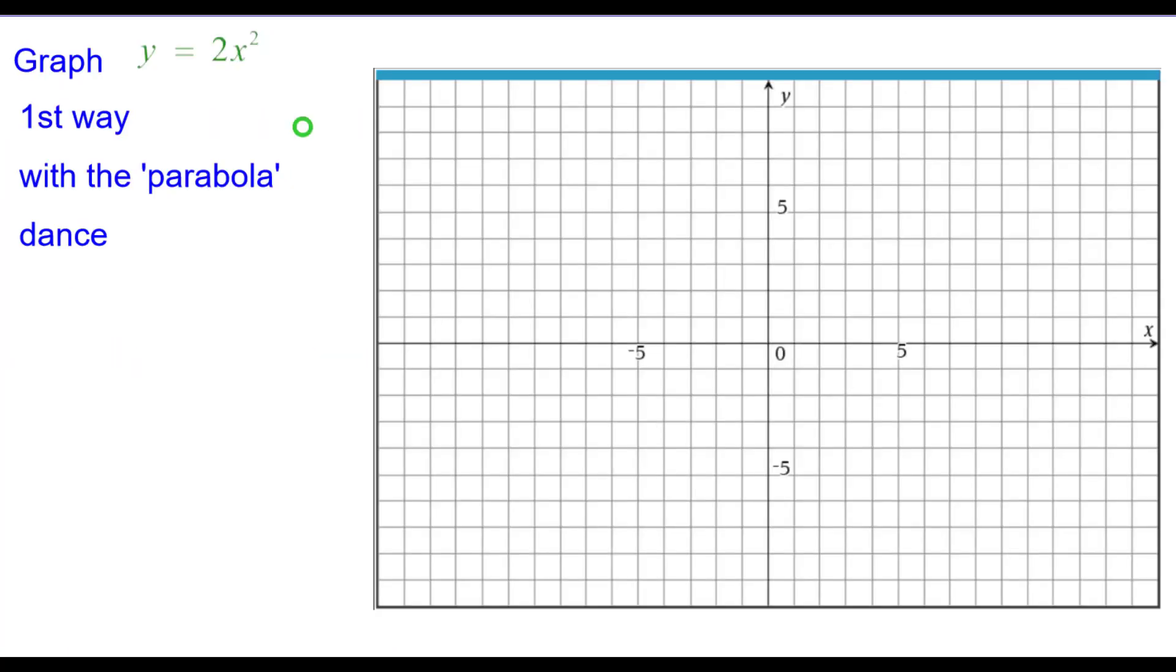The first way is with what we call the parabola dance. Normally we start at the origin and here we will also do that because 2 times 0 squared is equal to 0.